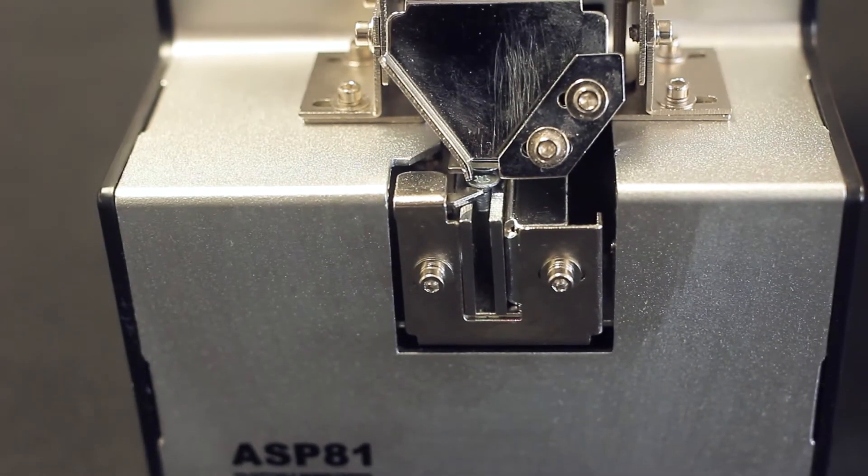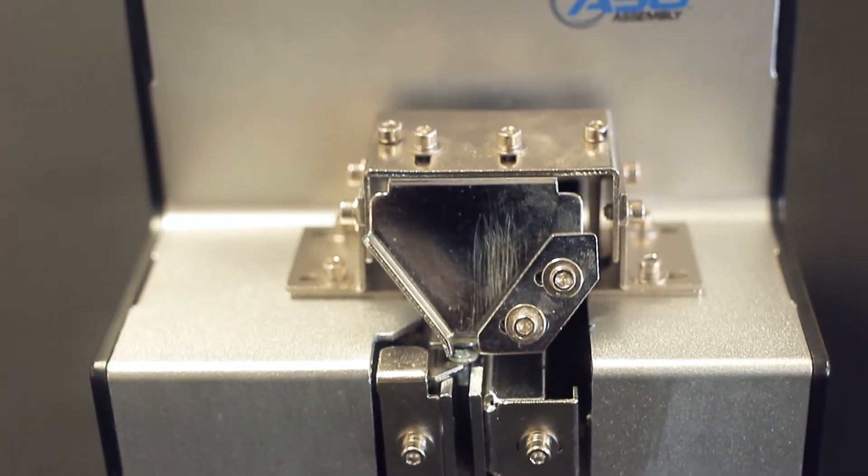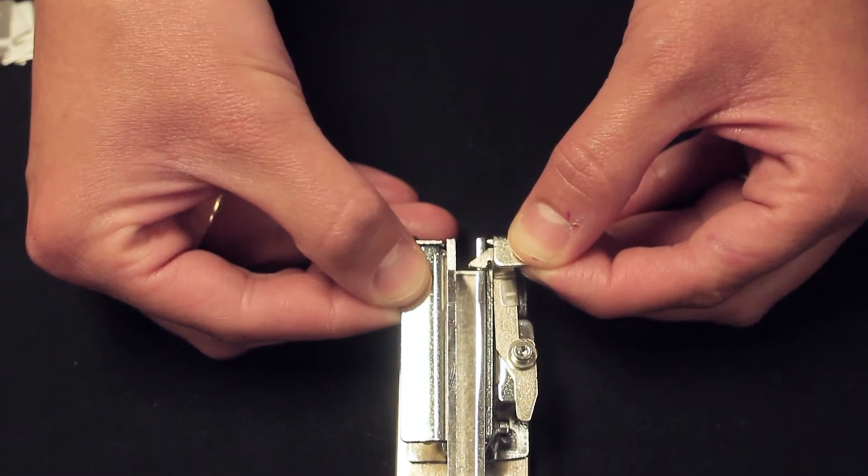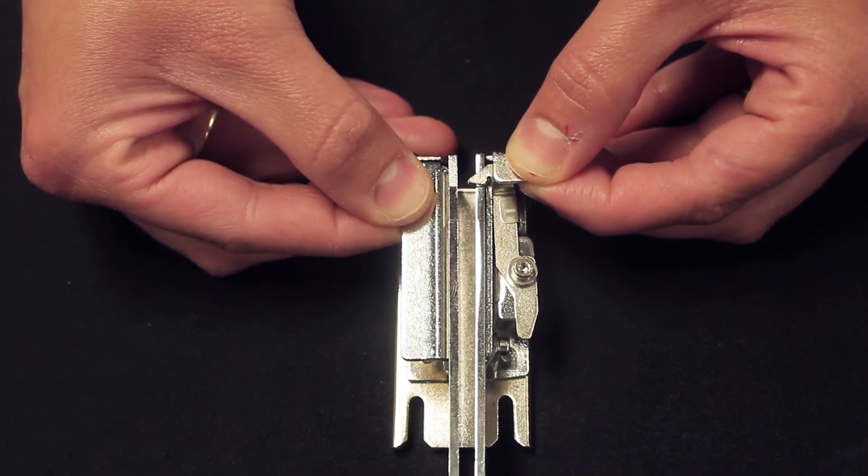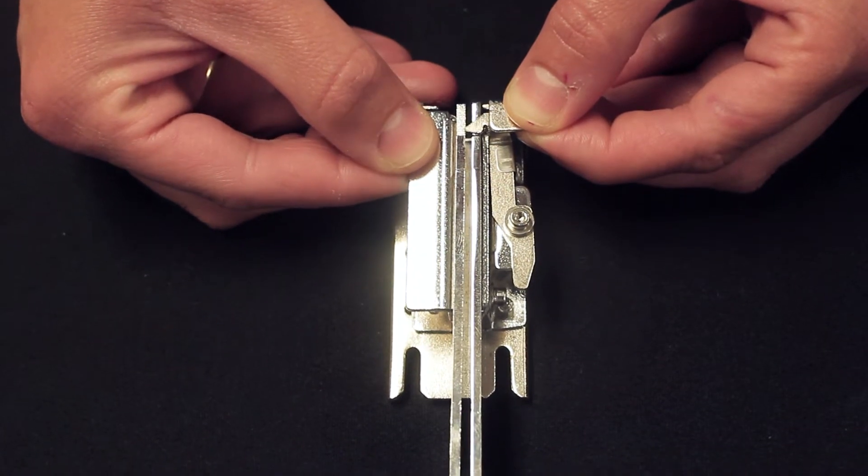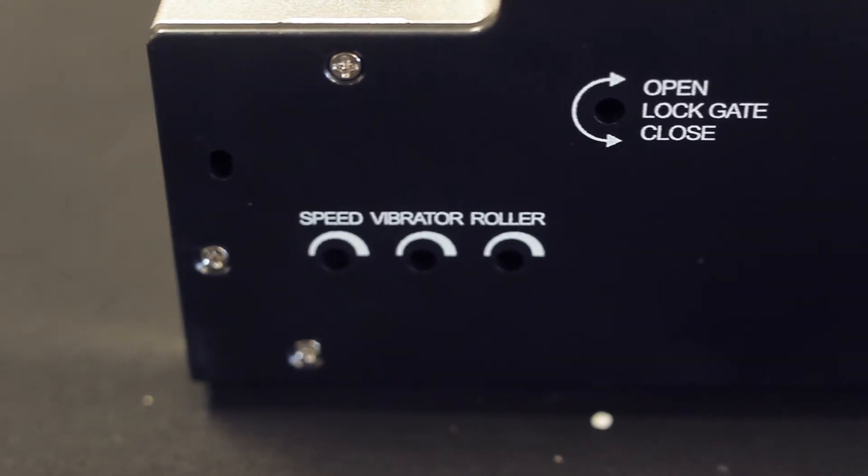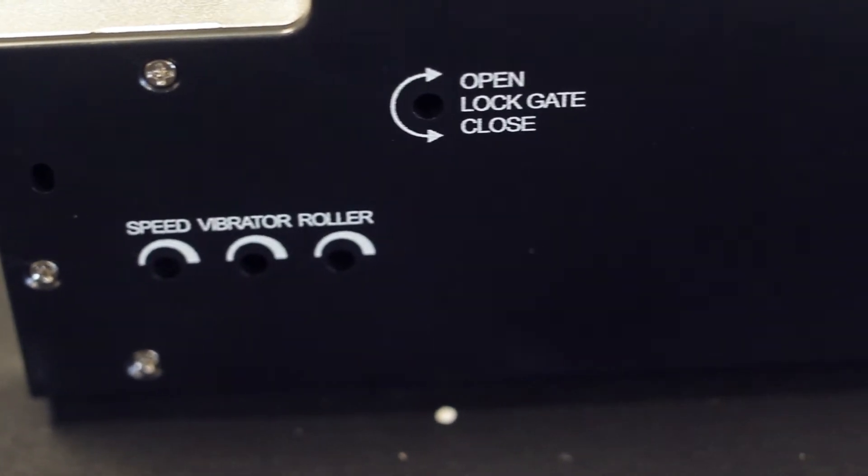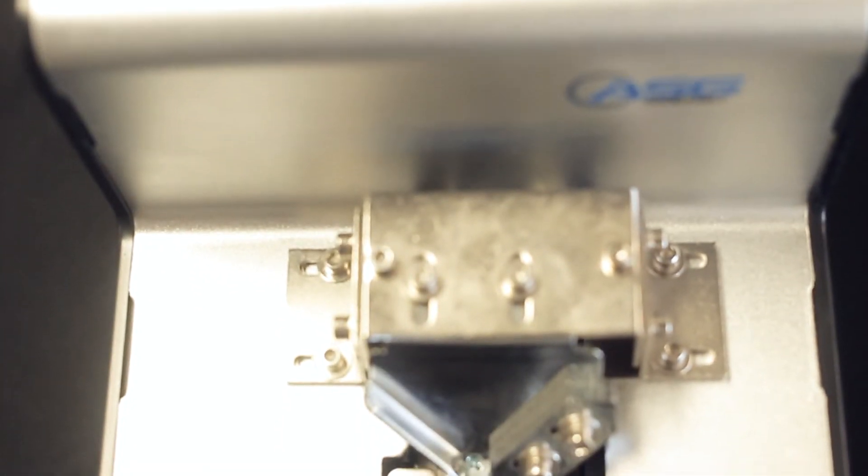The ASP-81A has an adjustable rail to accommodate different screw sizes, so there is no need to change out different rails. It accommodates screws from triple zero to number ten. There is an adjustable function for vibration time, amplitude, and operation shutoff delay.